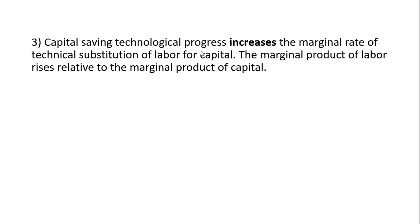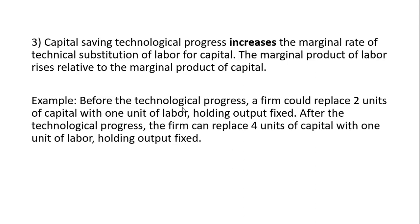Capital-saving technological progress increases the marginal rate of technical substitution of labor for capital. The marginal product of labor rises relative to the marginal product of capital. Before the technological progress, a firm could replace two units of capital with one unit of labor, holding output fixed. After the technological progress, the firm can replace four units of capital with one unit of labor, holding output fixed. So that is capital-saving technological progress.